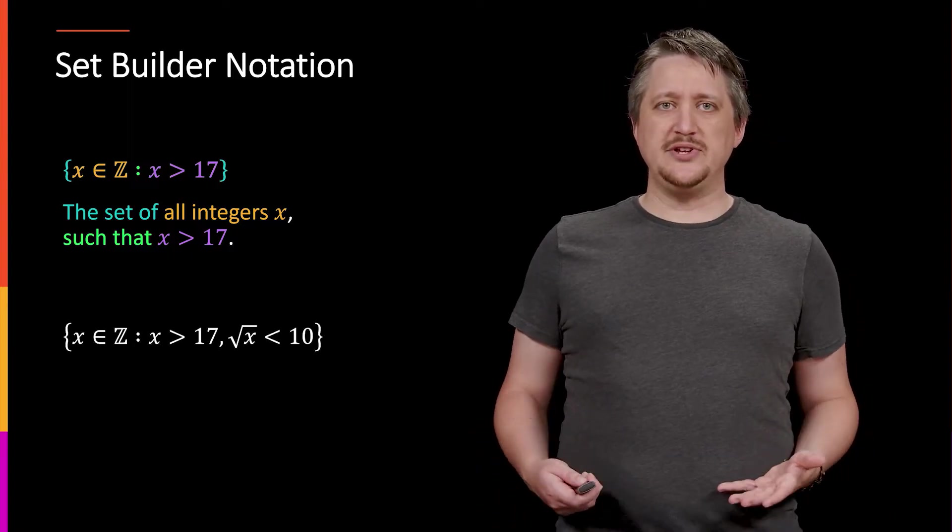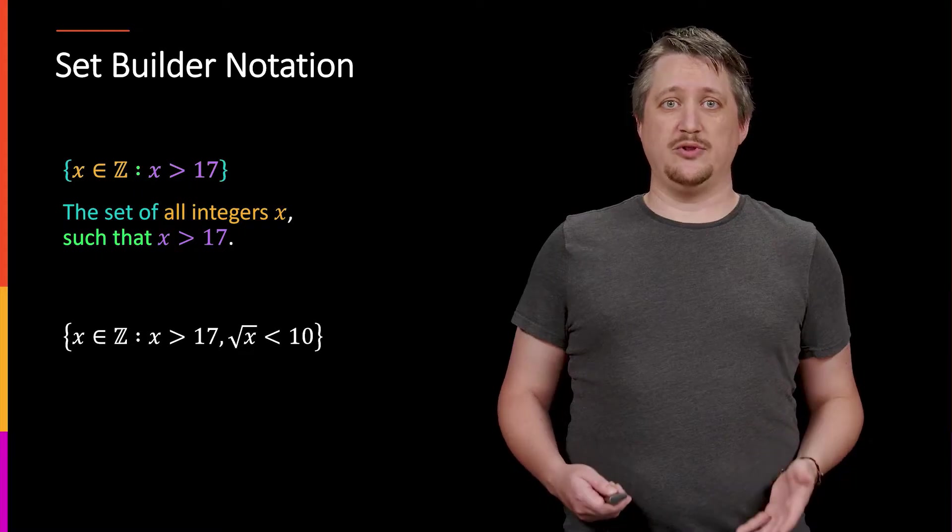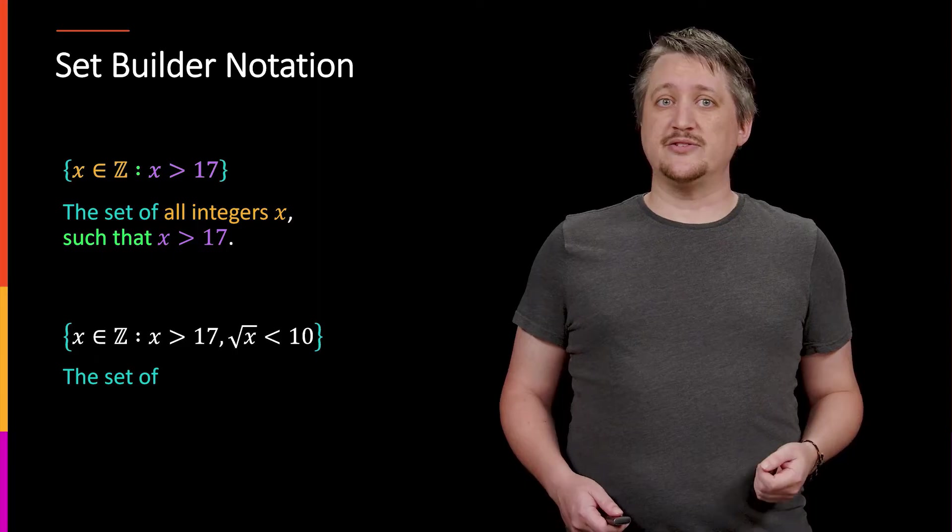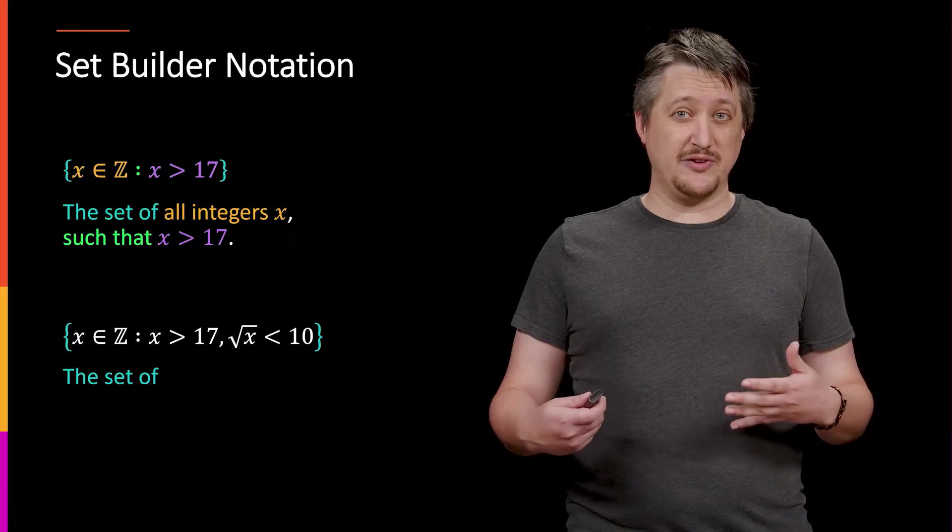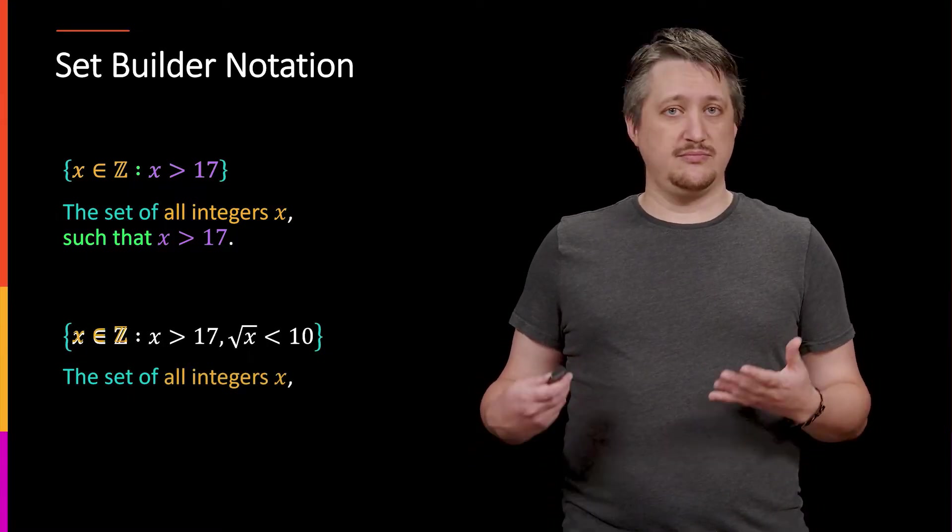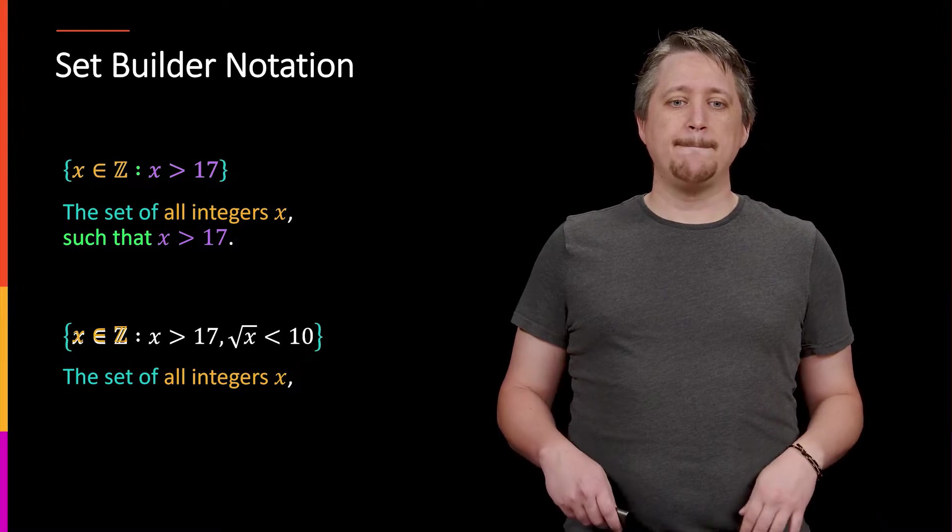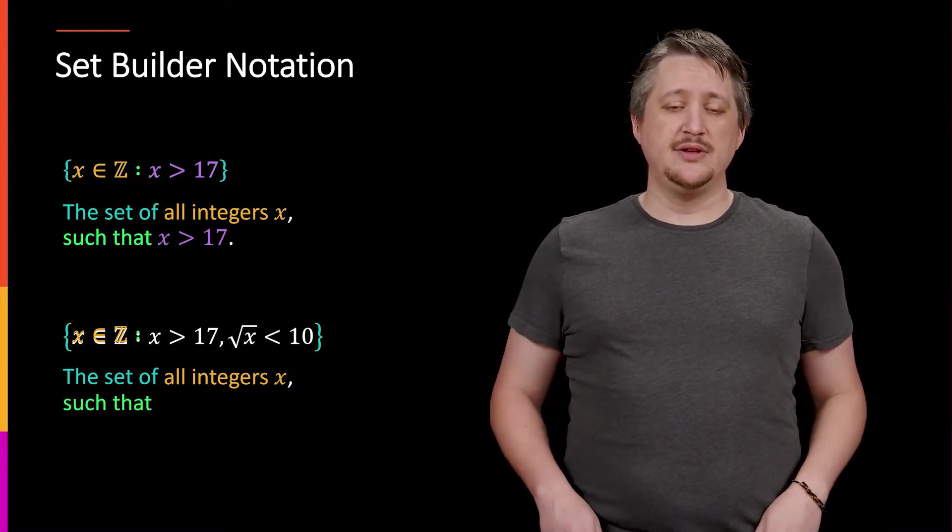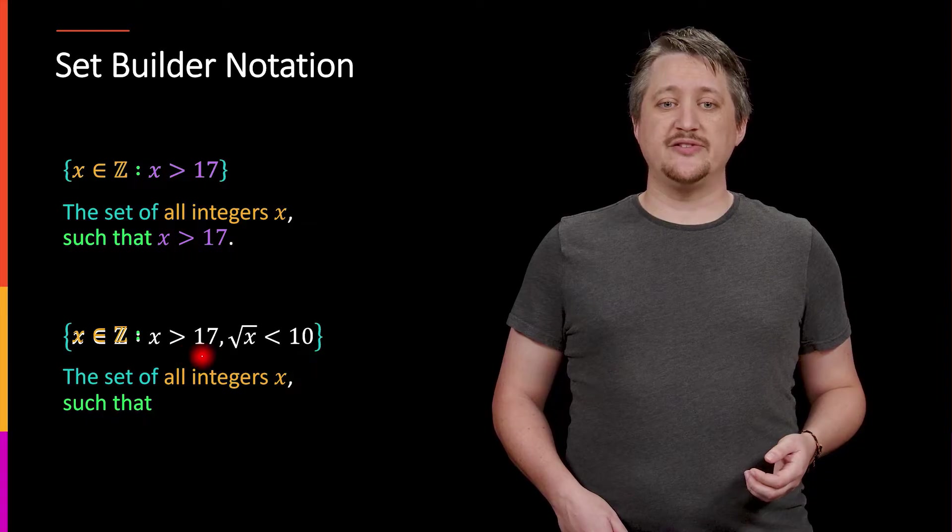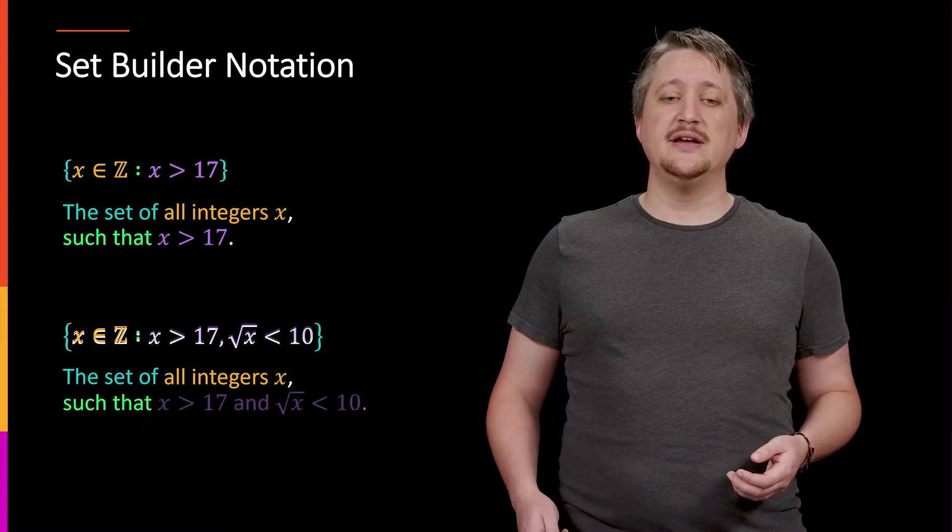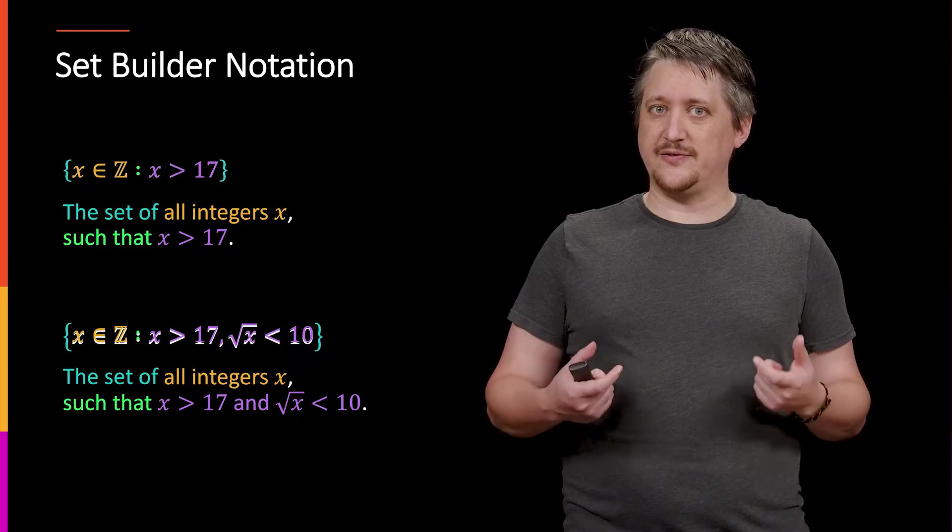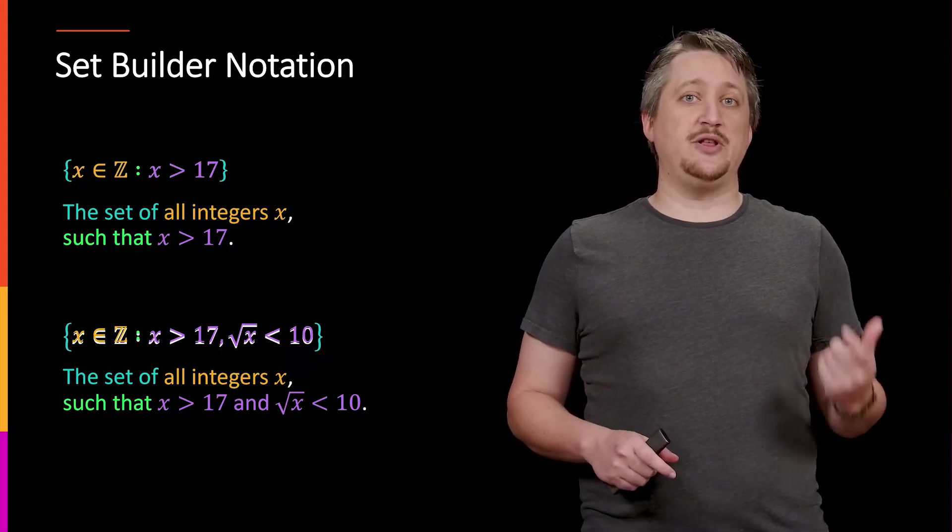As another example, same deal here. We have an open brace, that's telling us we're looking at a set. So we have the set of. Then we still have that x in z. So it's telling us that we're looking at specifically x is the dummy variable, but specifically they're integers. So we're looking at the set of all integers x, we're naming the dummy variable such that, that's the colon, and then now we have a comma in our properties. So we have that x is greater than 17, comma, square root of x is less than 10. So that's telling us that it needs both of those properties, not either, both. It has to satisfy both of those things simultaneously.